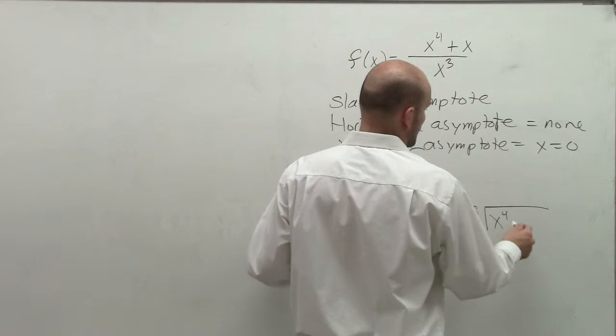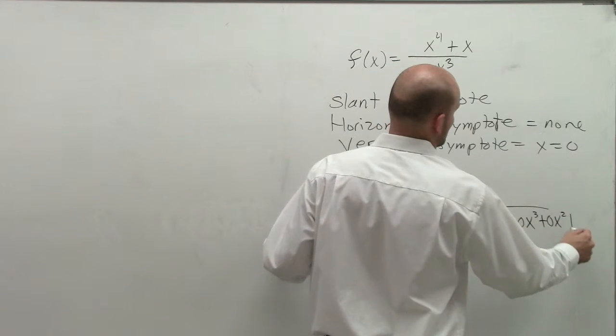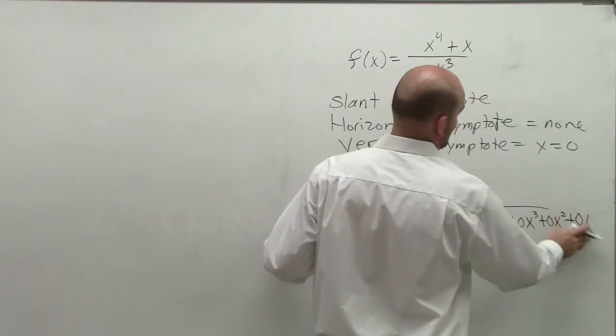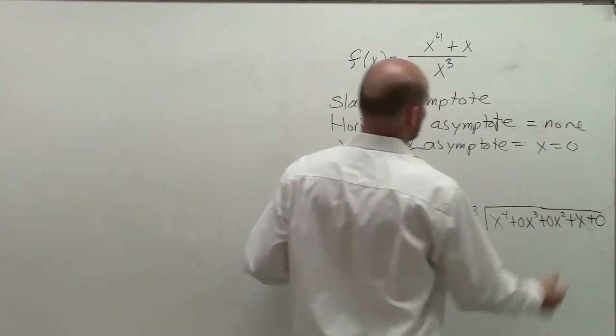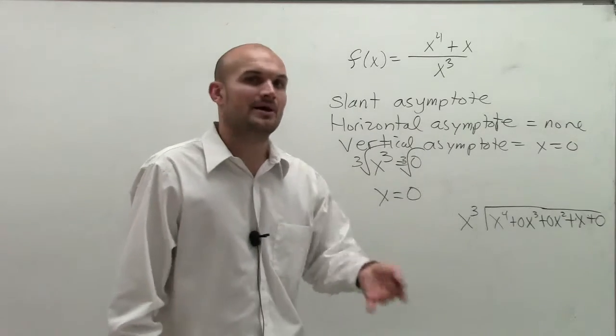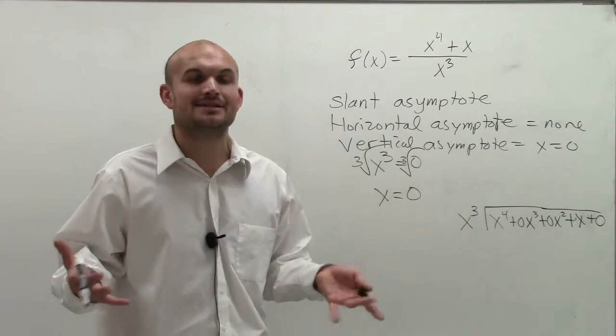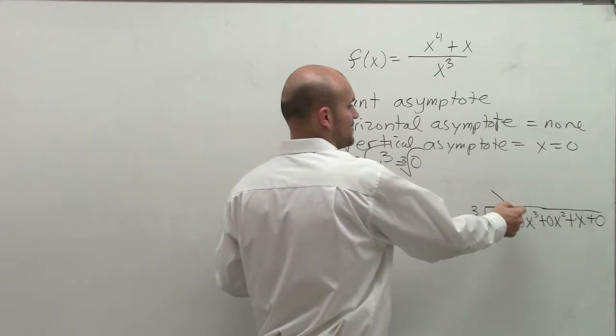However, I'm going to write it out, x to the fourth plus zero x cubed plus zero x squared plus zero, plus x plus zero. And I'm just going to write these zeros in there so you guys can get a little idea of the placeholders. You don't have to, but I like to do it because I think it helps. So x cubed goes into x to the fourth how many times?